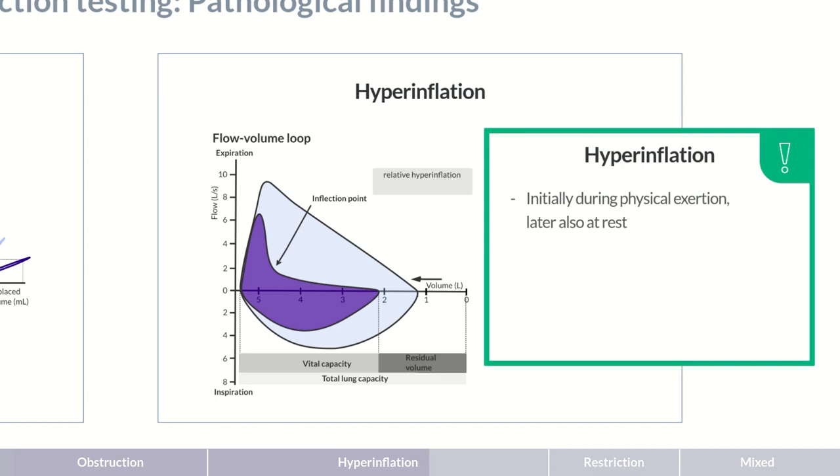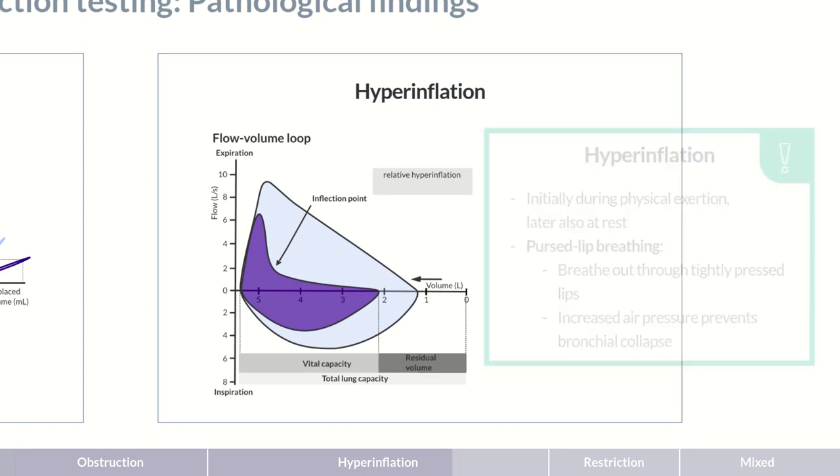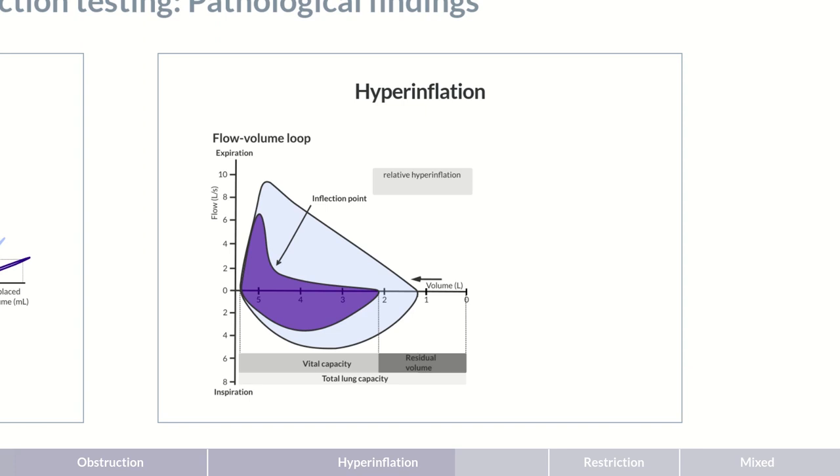Patients can initially counteract a relative, that is, less pronounced hyperinflation, through pursed lip breathing. Here, the patient breathes in through the nose and out slowly through tightly pressed lips. This increases air pressure in the bronchi, preventing their collapse during expiration. So relative hyperinflation is the result of decreased air efflux caused by bronchial collapse. It depends on the respiratory rate and is initially reversible. Therefore, it's also referred to as dynamic hyperinflation.